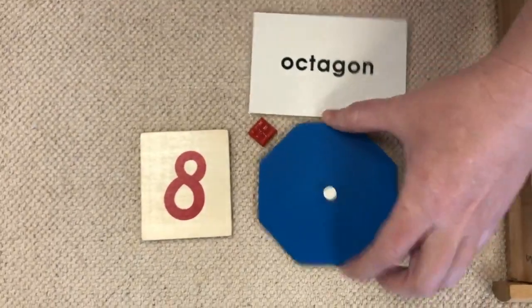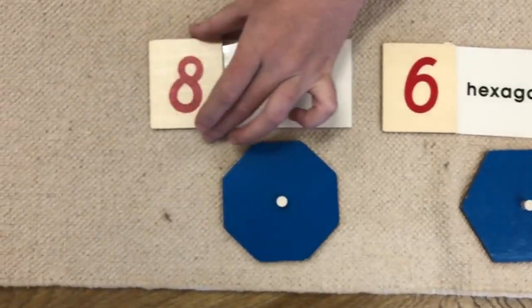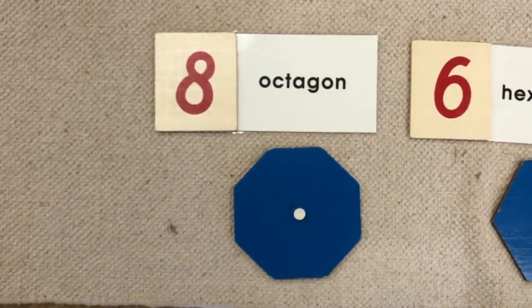Let's put the octagon down here with its octagon label, the number eight, and we'll look at a different polygon.